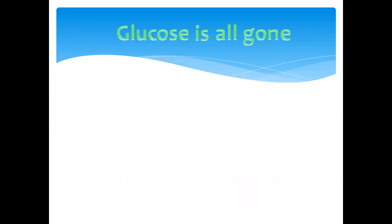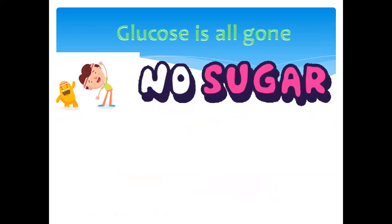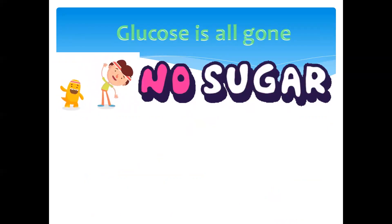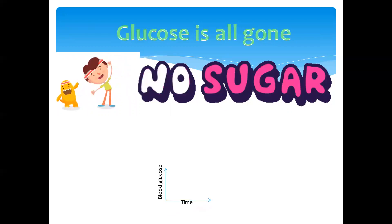The opposite happens when the glucose is all gone. For example, a person hasn't eaten in a long while or they've been very physically active. As a result, they would have burned up the glucose that they had within their bloodstream, and the glucose level would then decrease.